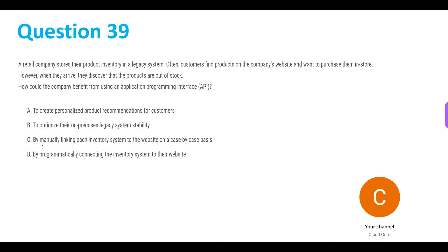Wherever you see the word 'manually,' think about it — the entire point of cloud or computer systems is to minimize your own work and reduce manual labor. But option C says you need to link each inventory system to the website on a case-by-case basis, which increases your work. There's no need to increase your work, so C is not the answer.